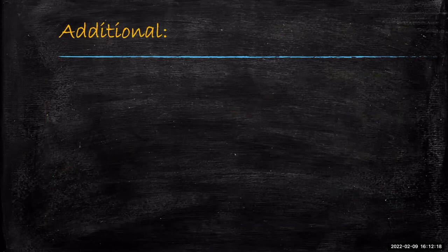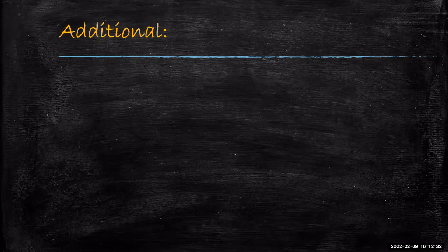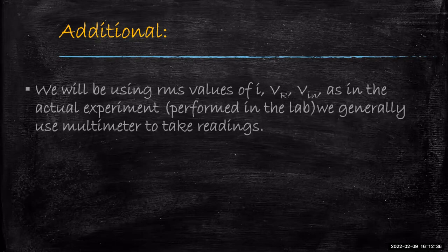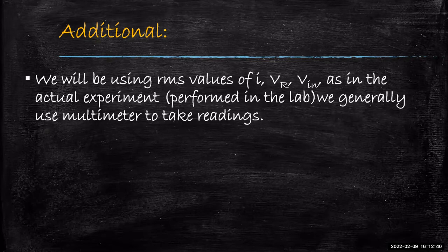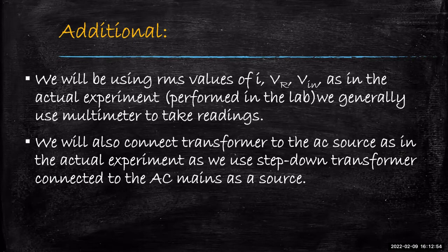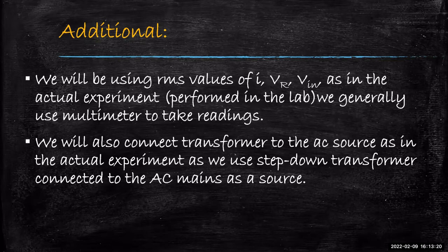Before we go to the final experiment in the simulator, we have added a few things to keep the simulation close to the actual lab experiment. We will be using RMS values of current and voltages, as in the actual lab experiment where a multimeter is used for readings and a multimeter gives RMS values. Similarly, we will connect a transformer to the AC source rather than connecting the AC source directly to the R and C circuit, because in the actual experiment a step-down transformer connected to the AC mains is used, with the secondary serving as the source to the RC circuit. Both steps are not compulsory but keep the simulation and actual experiment close to each other.